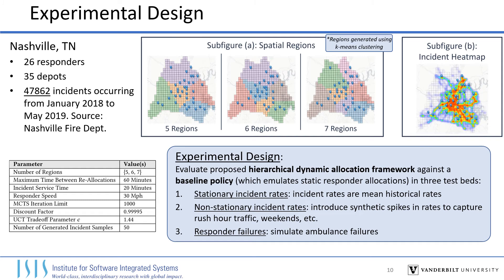To evaluate the proposed dynamic allocation framework, we compare it to a baseline policy which emulates static responder allocations used today. Our first set of experiments uses stationary incident rates based on historical means. The second introduces synthetic incident rate spikes to capture how incident distributions change based on events such as rush hour traffic. The third introduces responder failures to test each method's resiliency. We perform our experiments on a simulation of Nashville, Tennessee's response system using data from the Nashville Fire Department, and evaluate the system on three different region segmentations with five, six, and seven regions generated using k-means clustering.